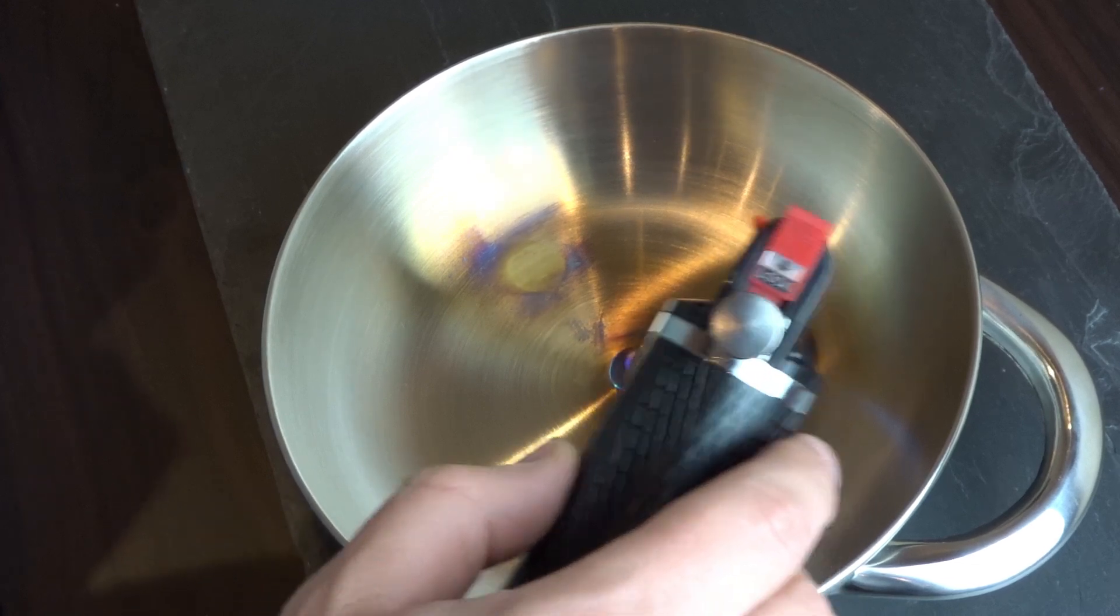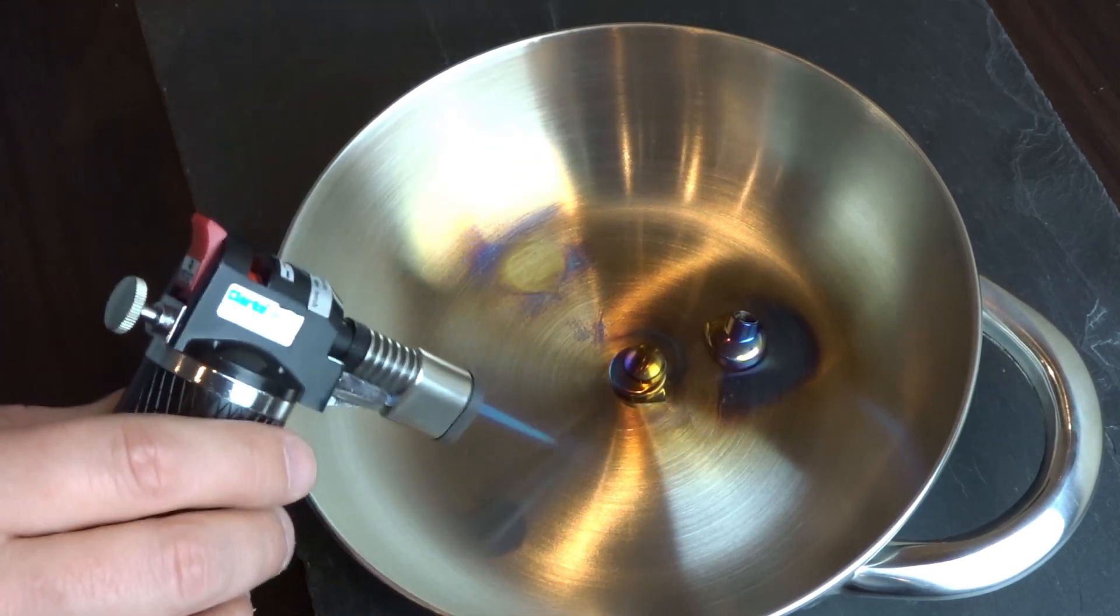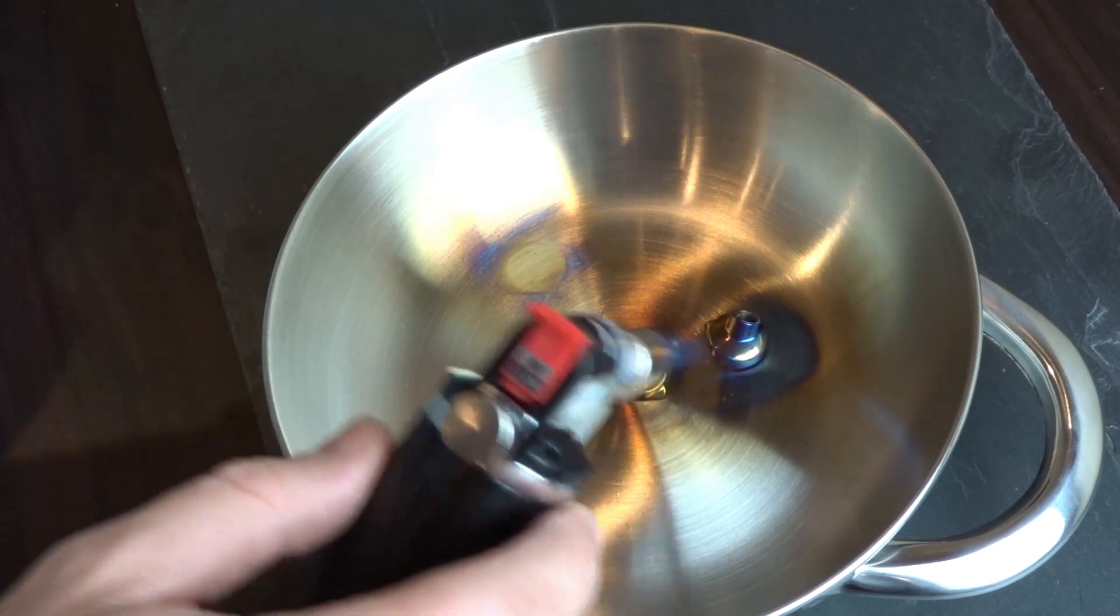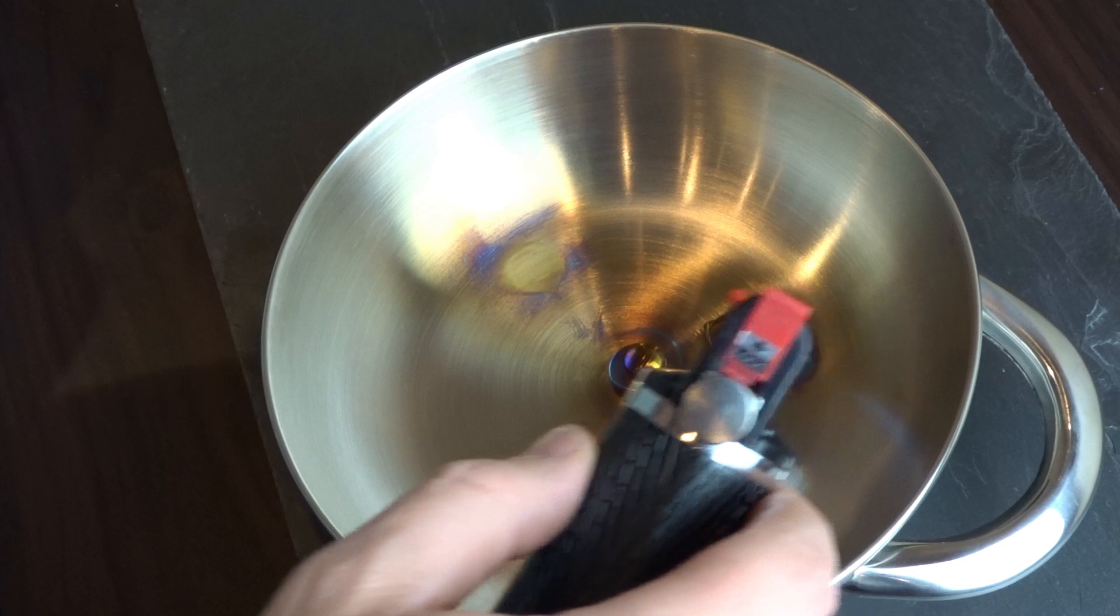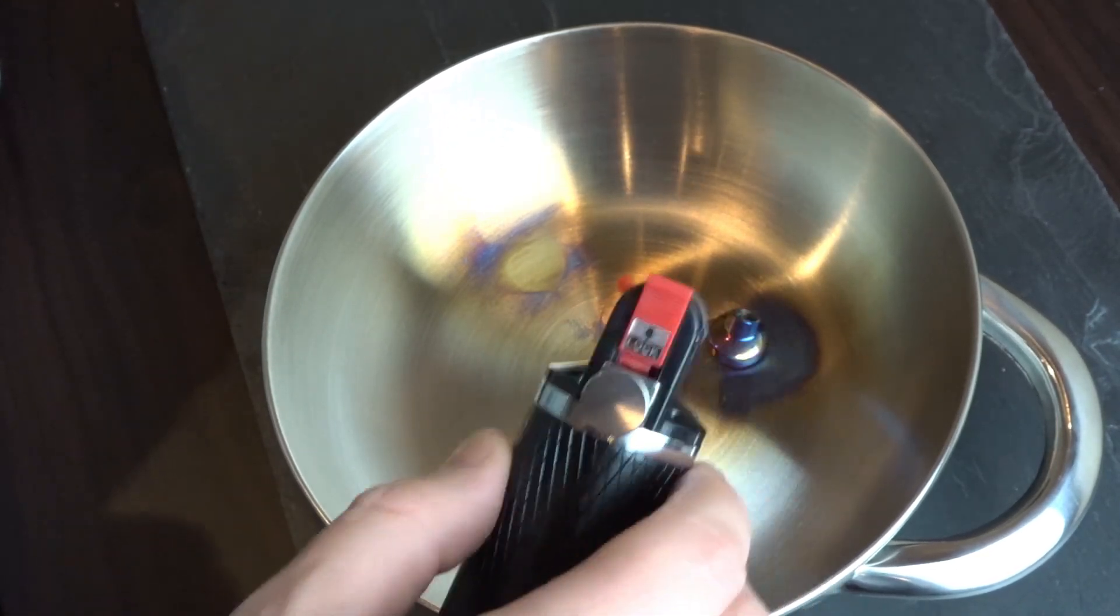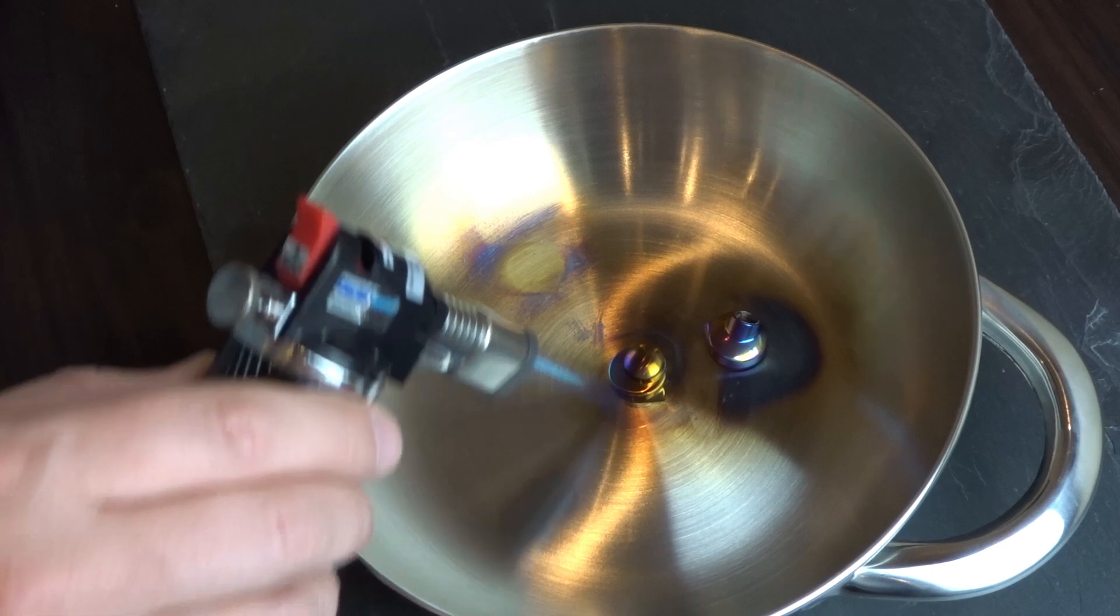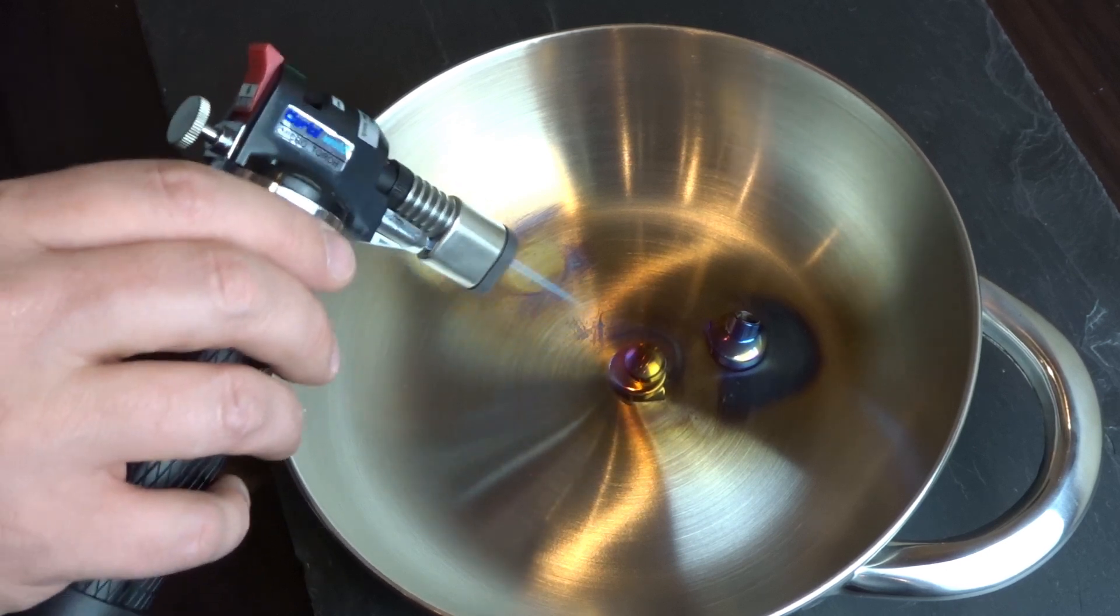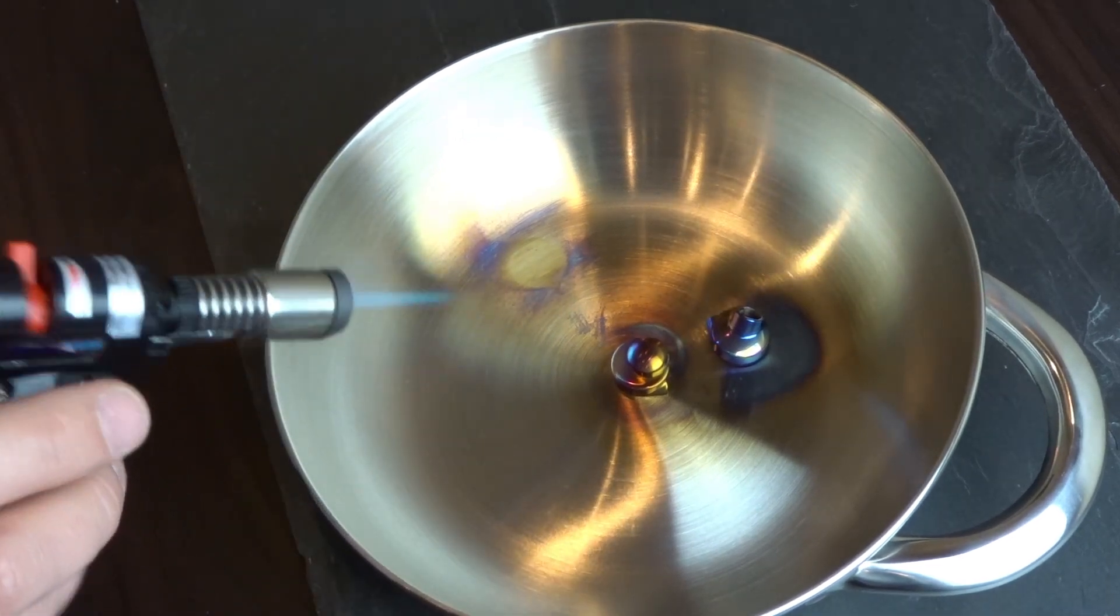Again, we wouldn't have been able to do this in an oven. You just wouldn't be able to concentrate the heat in any particular area. Wow, look at that. Now that is a thing of beauty. Let's see if we can just add a little bit more color on this one side here. There we go. I think I'm going to leave it there.